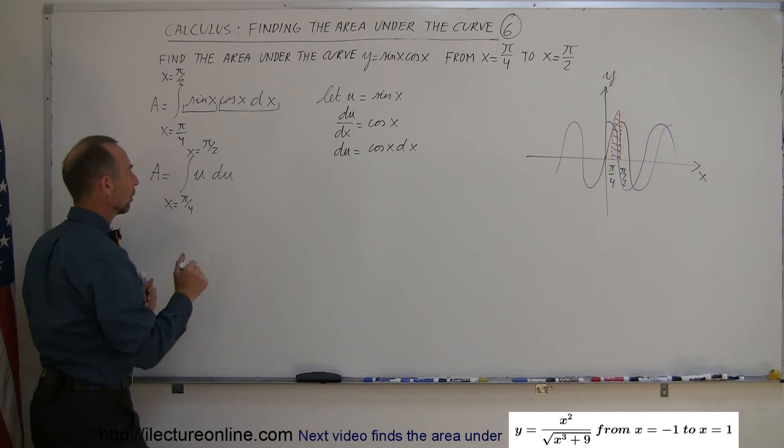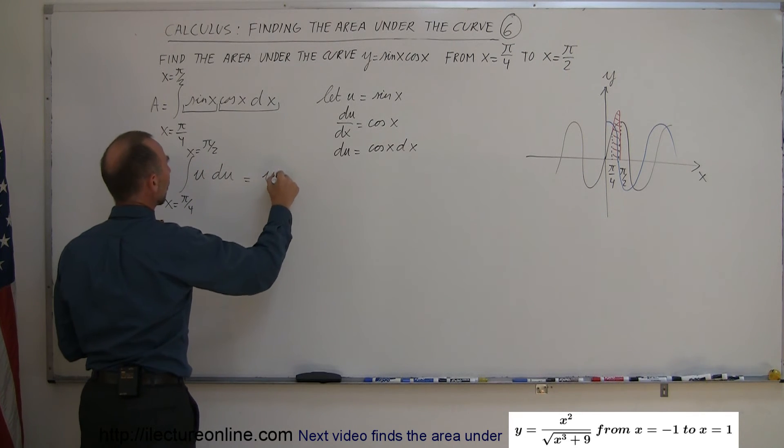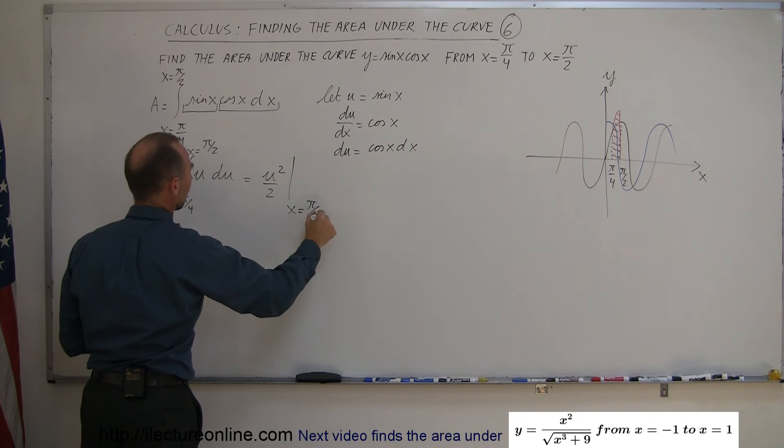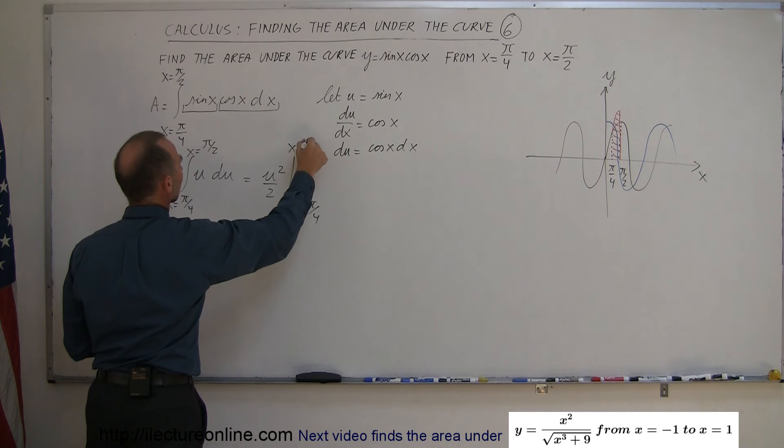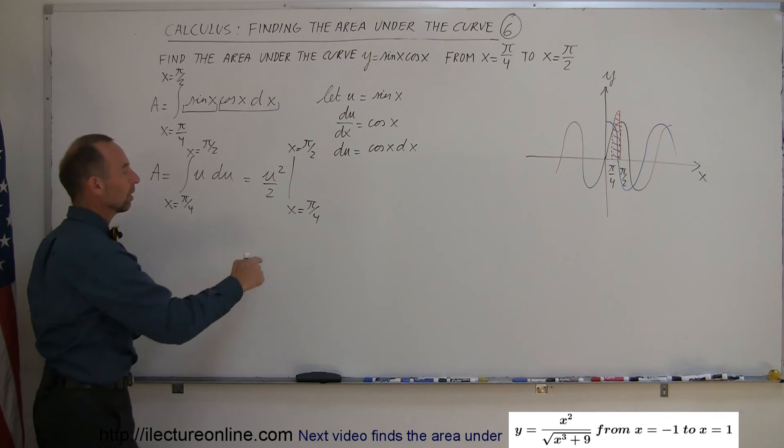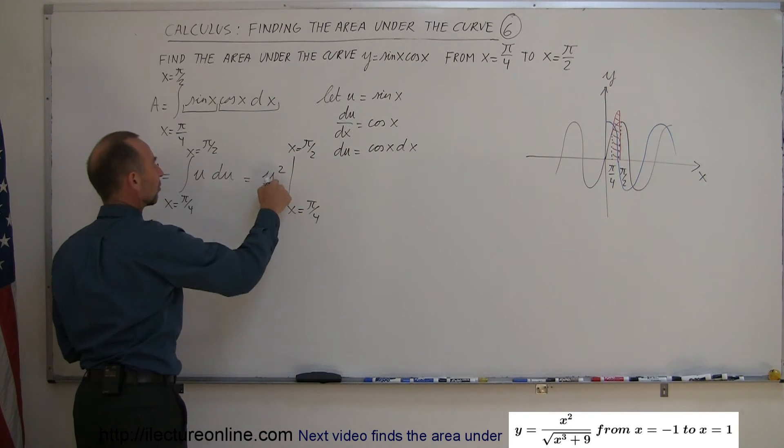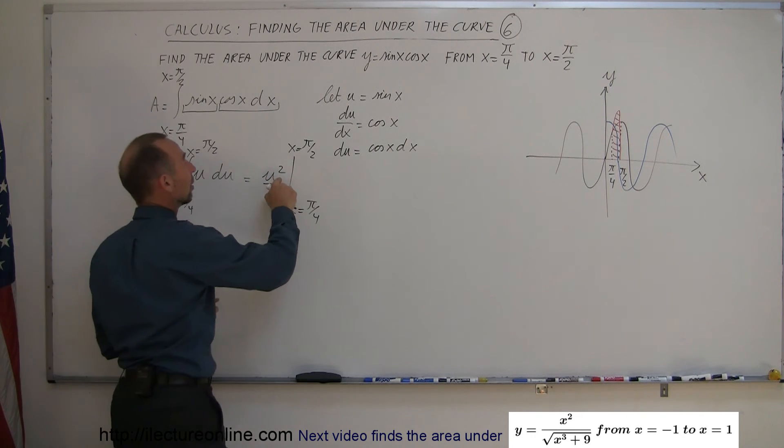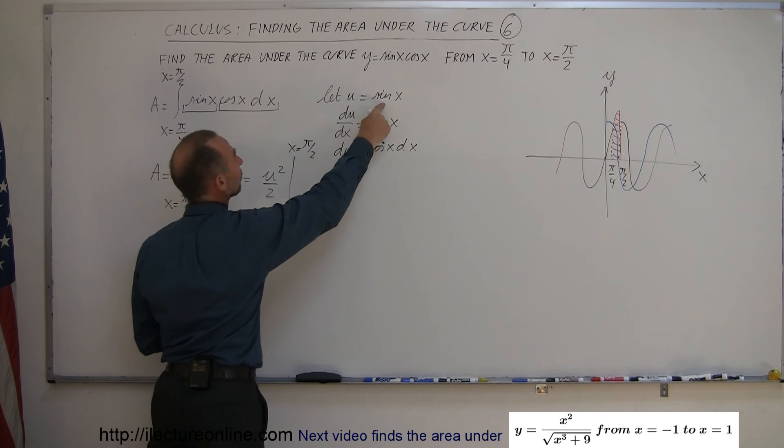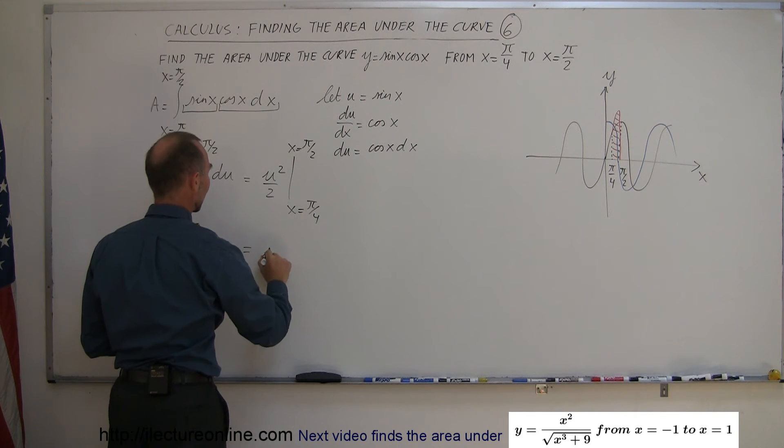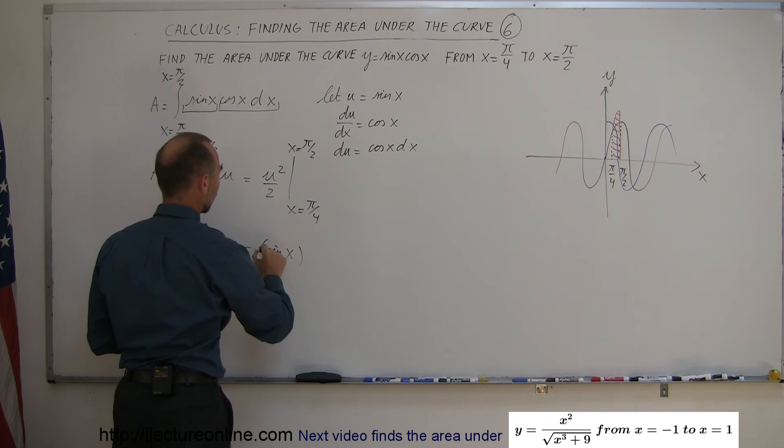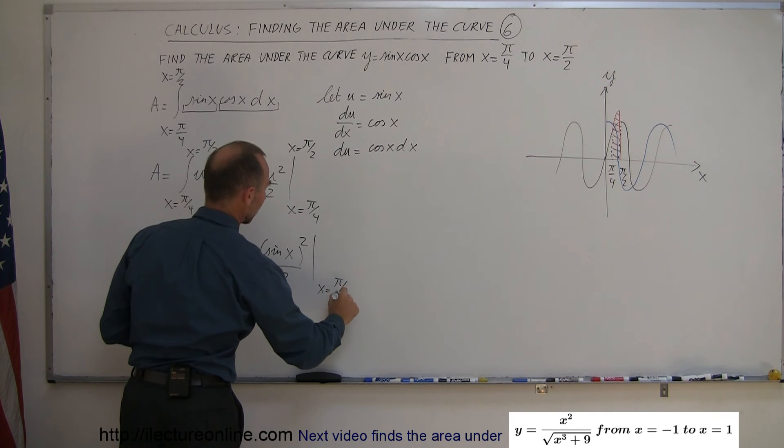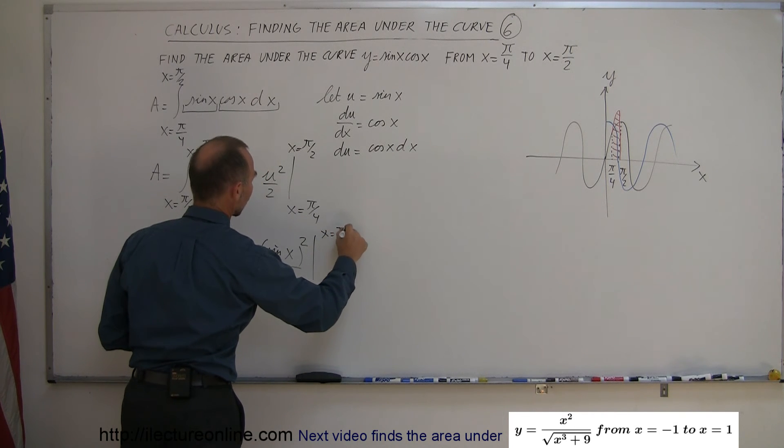So, just see what we do in just a moment. So, the integral of this is u squared over 2 and evaluated from x equals pi over 4 to x equals pi over 2. Now, we can't plug in the limits because the limit variables do not match the variable I have here. So, what I have to do now is resubstitute back in what u is equal to and u is equal to the sine of x. So, this can now be written as the sine of x squared divided by 2 and evaluated from x equals pi over 4 to x equals pi over 2.